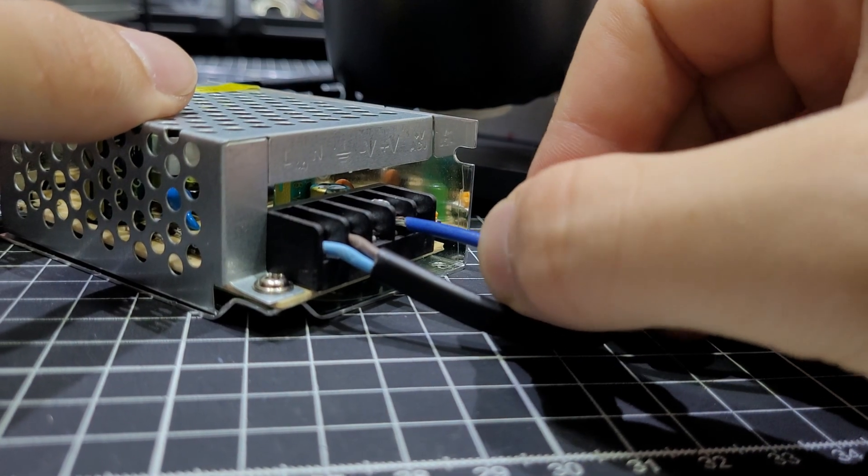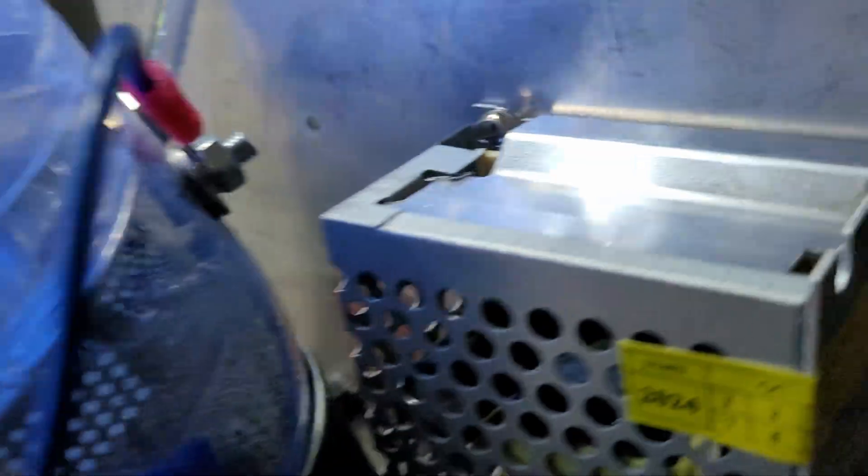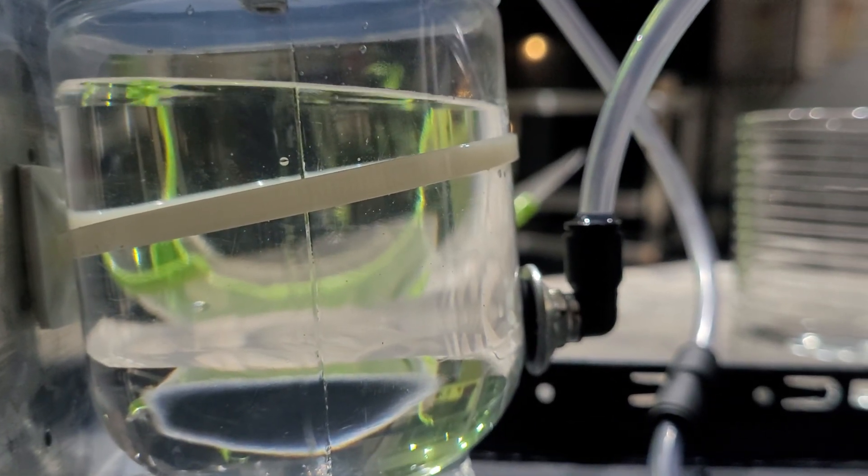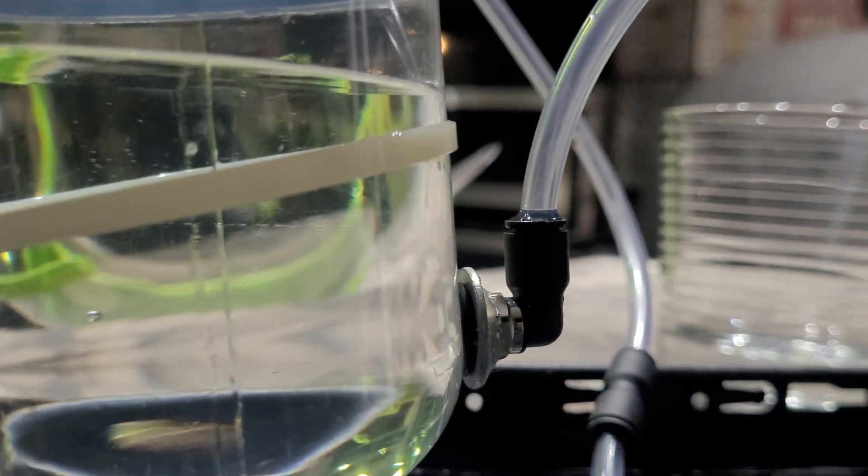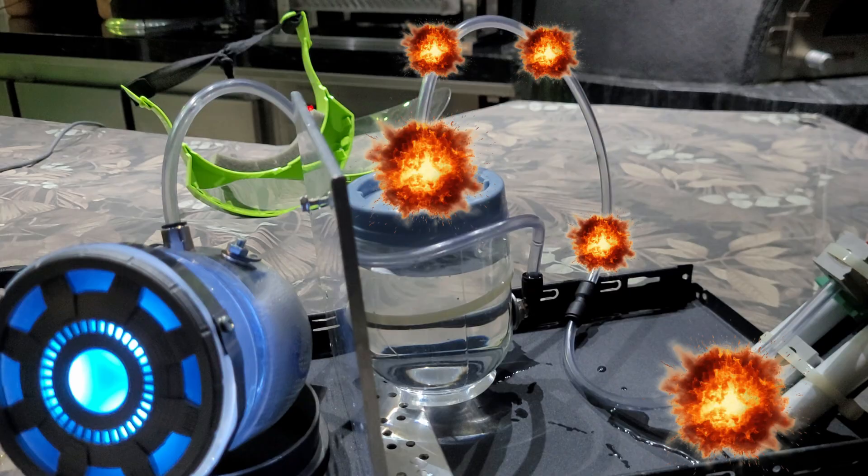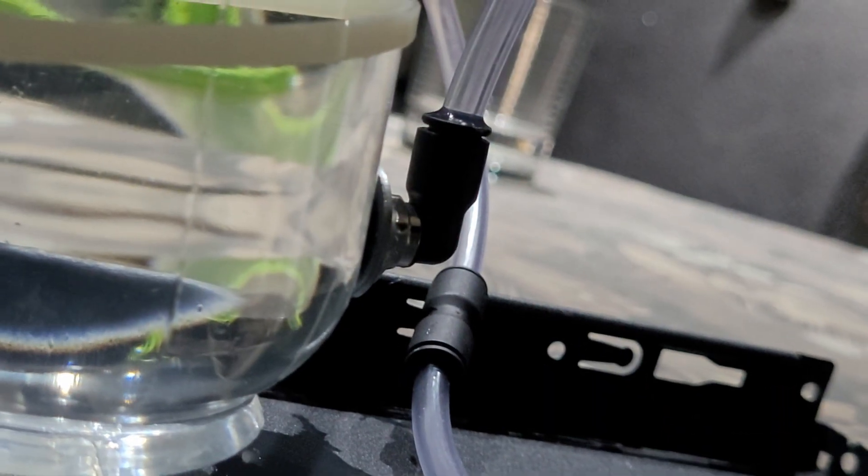One very important part of this system is the protection filter. The gas produced goes all the way to the bottom of a bottle filled with water. Then rises up and exits through the top, heading towards the rockets. If there's a backfire, the water stops the flame from reaching the reactor. And this single bottle can save the whole build from exploding.